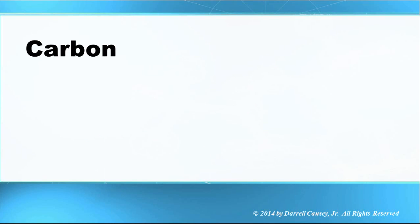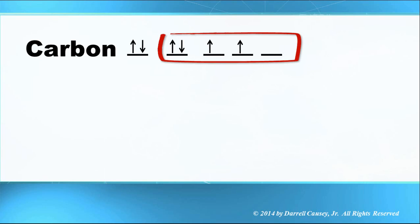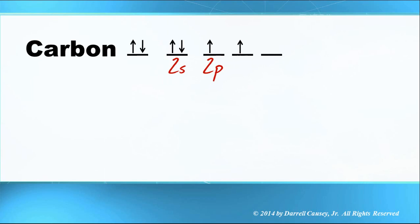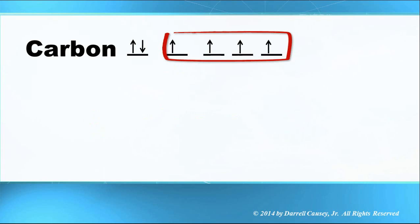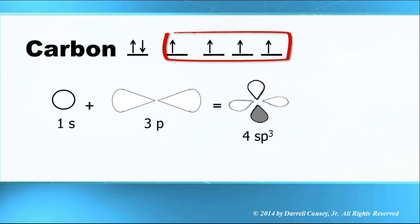Let's look at carbon. We see that it has four valence electrons — two in the s and two in the p's. Even though this is the Lewis dot symbol, when it bonds we get four equal bonds. Therefore, one of the s electrons jumps up into the empty p, and these all combine to give us a brand new set of sp³ orbitals — and of course, that's a tetrahedral molecule.